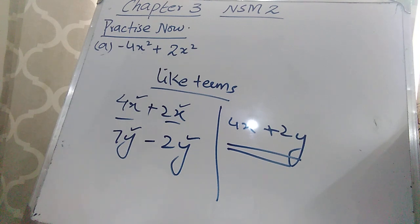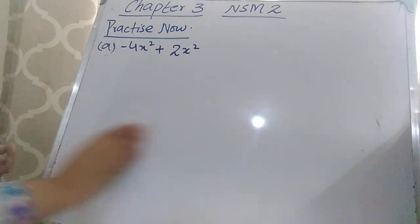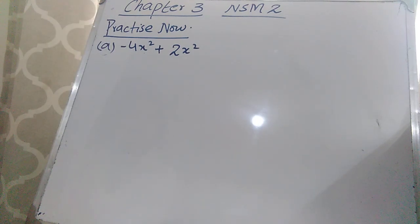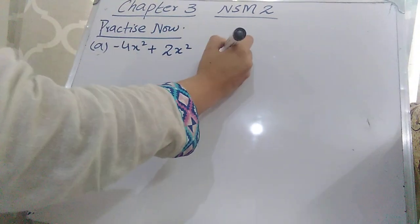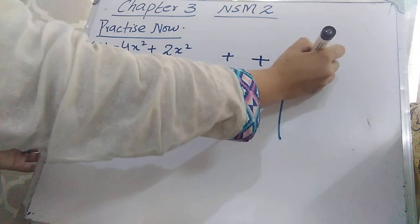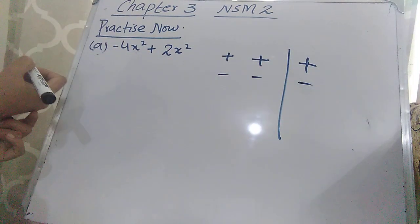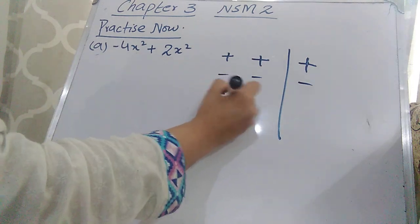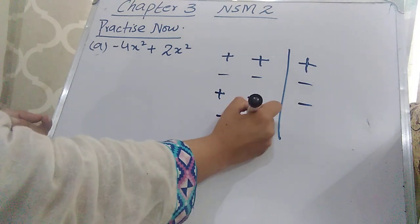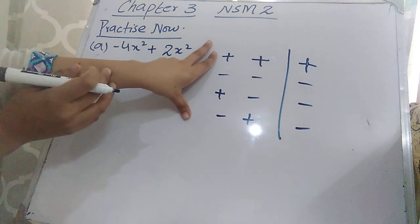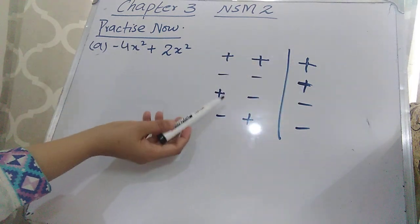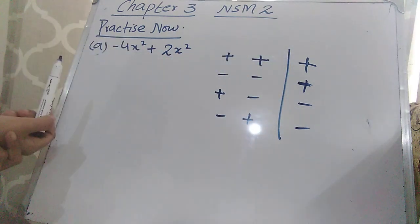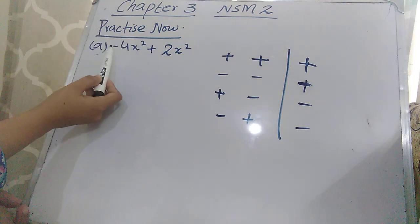In questions involving addition and subtraction in algebra, you first need to look at the signs with both numbers. Remember: plus × plus = plus, minus × minus = plus, plus × minus = minus, and minus × plus = minus. In short, when you multiply similar signs your answer is plus, and when you multiply opposite signs your answer is minus.